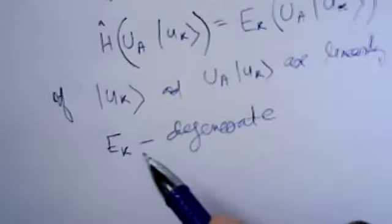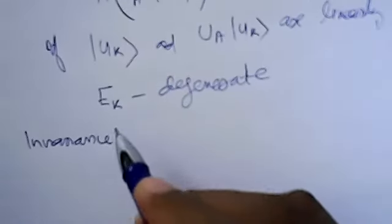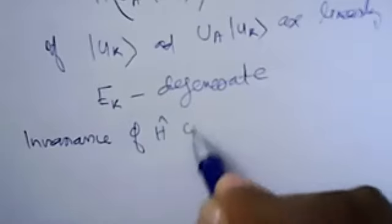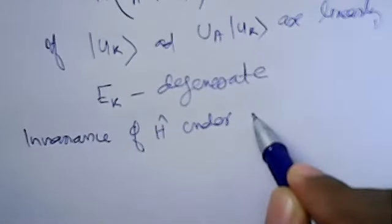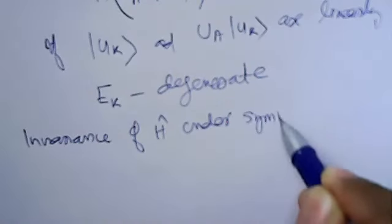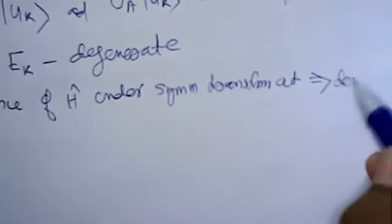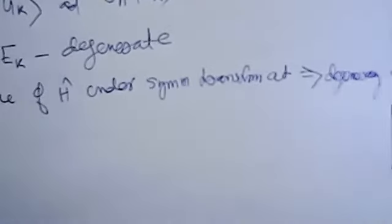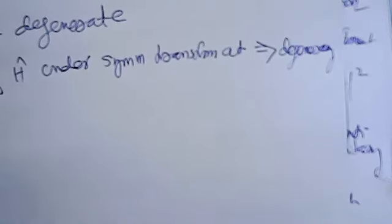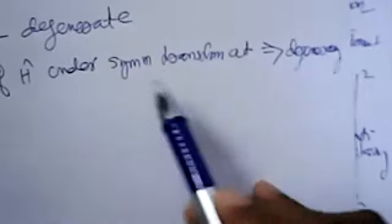So the invariance of the Hamiltonian under a symmetry transformation implies degeneracy. That is the reason for degeneracy. Invariance of the Hamiltonian under a symmetry transformation implies degeneracy. So degeneracy and symmetry are closely connected.